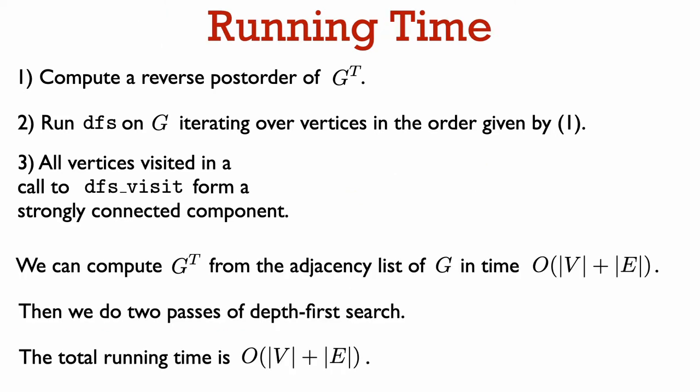It's pretty easy to see the running time of Kosaraju's algorithm. We can compute an adjacency list for G-transpose from the adjacency list of G in time order number of vertices plus number of edges, just by iterating through all the edges of G and adding the reverse of each edge to the G-transpose graph. Apart from that, we just do two passes of depth-first search, one on G-transpose and one on G. So the total running time is order number of vertices plus number of edges.